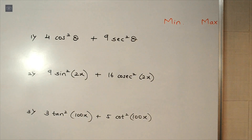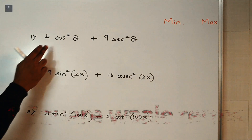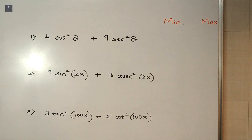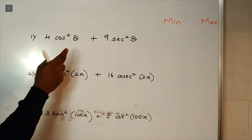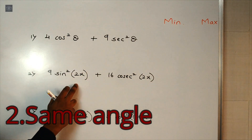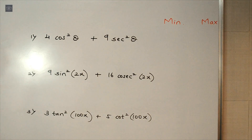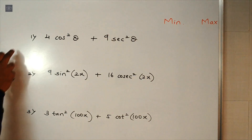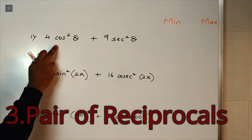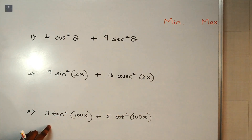Here we have the questions on the board. Before solving, let's check if all three conditions are satisfied. Condition one: all trigonometric terms are squared — satisfied. Condition two: the angle with the first term is the same as with the second term for all three expressions — satisfied. Condition three: all expressions are pairs of reciprocals — we have sec and cos, sin and cos, and tan and cot — satisfied.